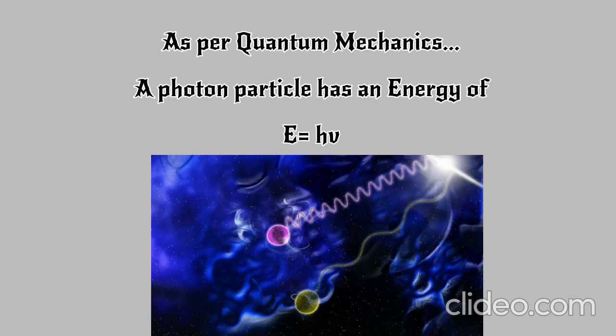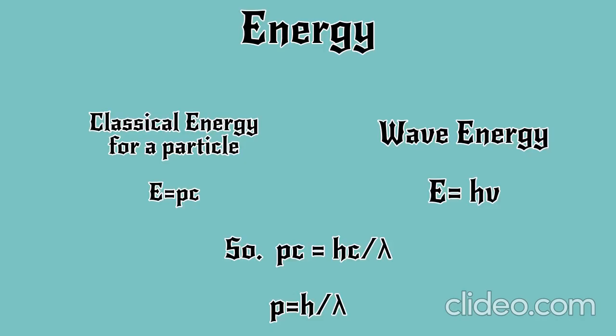Now, from our recent understanding of quantum nature of a photon particle, we know a photon particle has energy hν equals hc by lambda. So, equating both, we obtain pc equals hc by lambda. Canceling c, we get lambda equals h by p.